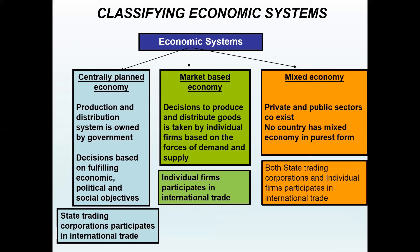In market-based economic systems, the decision to produce and distribute goods is taken by individual firms based on the forces of demand and supply, and individual firms participate in international trade. Lastly, in a mixed economy, both private and public entities coexist, and both state trading corporations and individual firms participate in international trade.